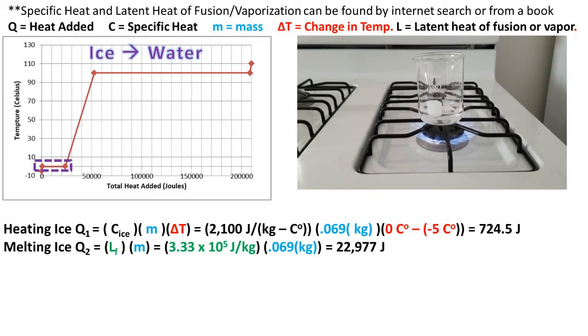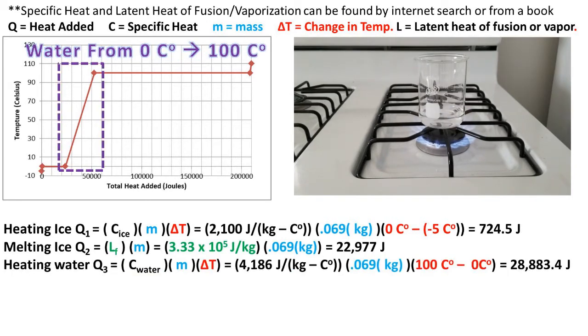Notice on the temperature versus heat graph that the temperature doesn't increase during the phase changes. For the next step, we need to find out how much heat energy will be required to raise the water from 0 degrees Celsius to 100 degrees Celsius. We'll use the specific heat for the liquid water and multiply it times the mass of ice, which is now water, times the heat delta of 100 degrees. We get an additional 28,883.4 joules of heat energy needed to raise the water up to boiling point.